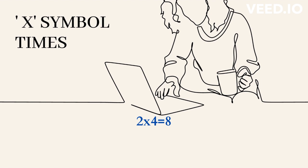This symbol is called times in a calculation, like 2 times 4 equals 8. We normally use multiply as the verb, for example, multiply 2 by 4.